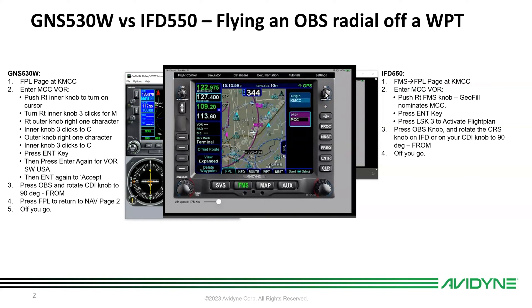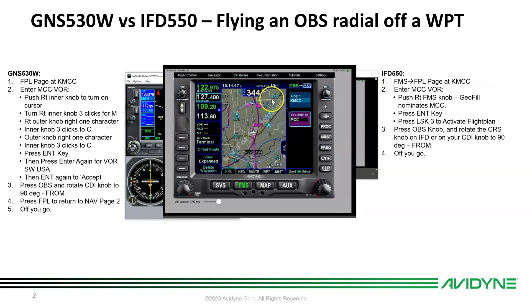I'll push the CDI knob — push for OBS. When I push it, it starts flashing as it switches from GPS mode to OBS mode, and you can see a digital readout of your OBS. Now on the simulator I can turn this knob to dial in an OBS. If you're practicing on the sim use this knob; if you're in the airplane you'd just turn the CDI like on the 530 sim. I'm going to spin this knob to 90 degrees — you can see the magenta desired track arrow around the compass rose getting its way to 90 degrees.